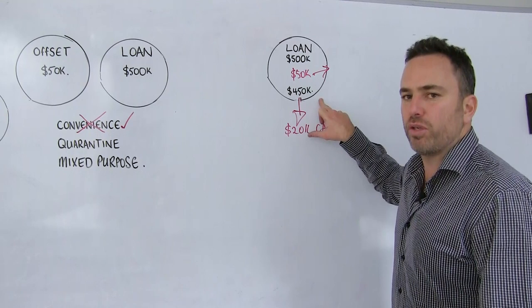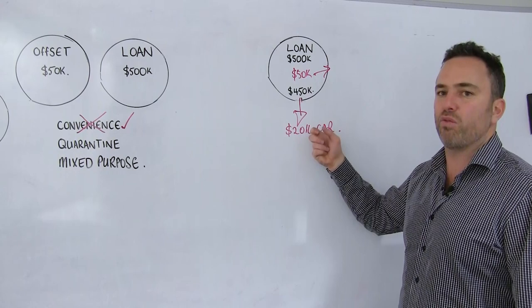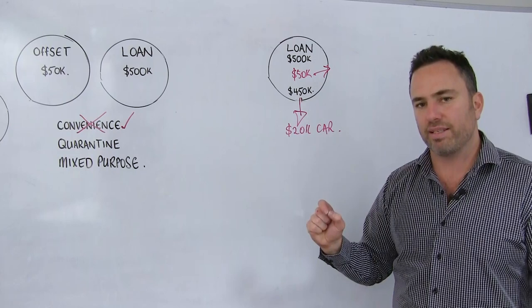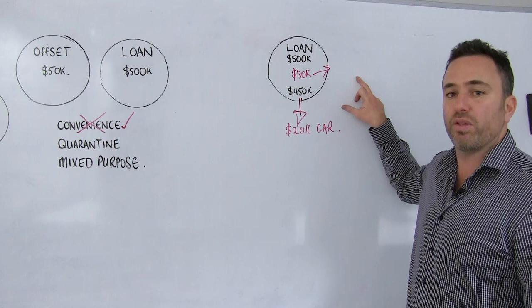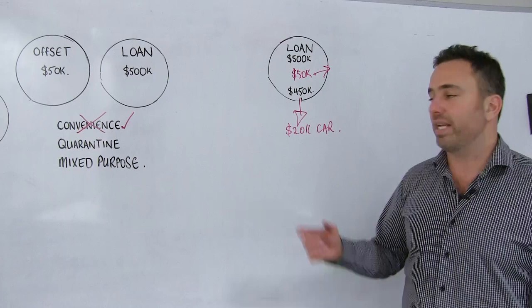What I mean by that is you can only claim interest on your tax return of $450,000. Just because you've borrowed this $20,000 within the context of investment loan, the purpose of the borrowings is the true test as to whether it's deductible and now you've got what's called a mixed purpose loan. $450,000 worth of investment debt and you've got $20,000 worth of owner occupied or personal debt that can't be claimed.